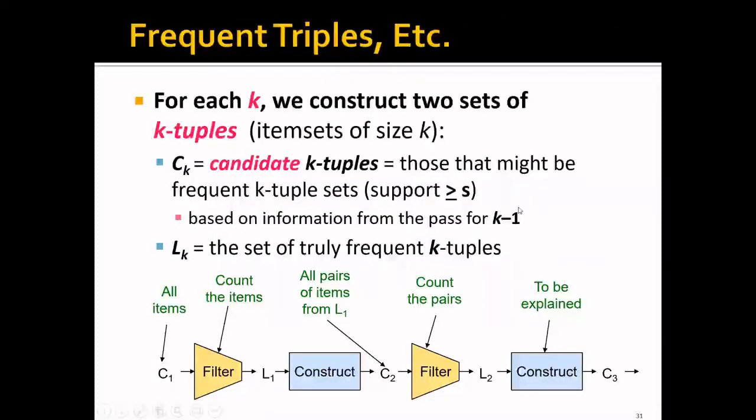Now that we know how to count and discover frequent pairs, but how about frequent triples or even item sets of size larger than three? In general, for each K, we need to construct two sets of K tuples, that's item sets of size K. And the first set would be C_K, and these are called candidate K tuples. And those are the item sets that might be frequent item sets, that is items that support larger than S. And how do we construct this C_K? We construct this C_K based on the information from the pass for K minus one. For example, we will construct C_2 based on the information from the previous pass where we get the frequent individual items.